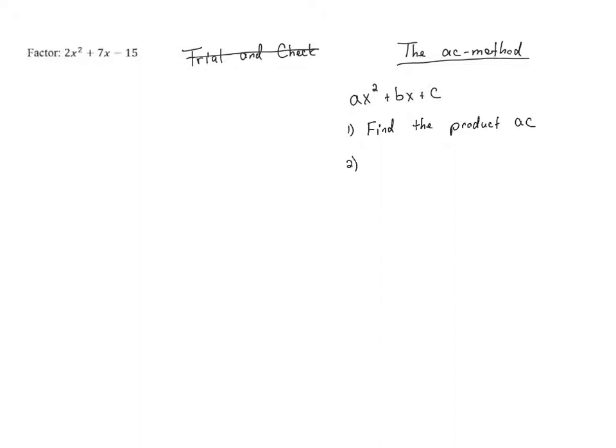Once we know what that product is, we're going to play a similar game to what we did before where we're looking for two numbers with a particular sum and a particular product. But what we want in this case is we want to find two numbers whose product is that number AC and whose sum is B. So we're looking for two numbers that have a product of AC and a sum of B. And this will make a lot more sense when we actually do an example where we have numbers. But we're still going to be finding two numbers with a particular sum and a particular product just like we did in the previous examples.